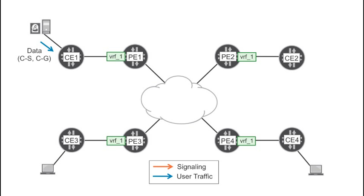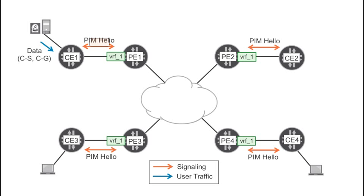The main protocol is Protocol Independent Multicast, or PIM. In Junos, you need to enable PIM at the interface connecting CE1 to the customer source; otherwise CE1 won't be able to process the incoming multicast flow. You also need to enable PIM at all the interfaces connecting CEs and PEs together. For example, CE1 and PE1 exchange PIM hello packets and become neighbors in this way.